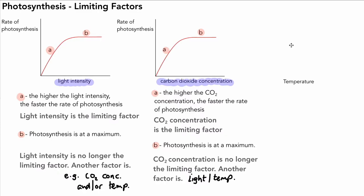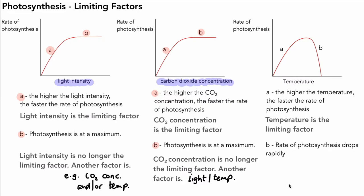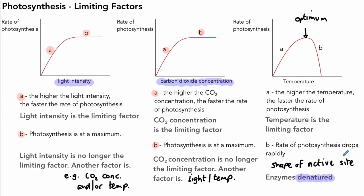The graph for temperature versus rate of photosynthesis has a slightly different shape. In region A, the higher the temperature, the faster the rate of photosynthesis — temperature is the limiting factor. In region B, the rate of photosynthesis drops rapidly after the optimum temperature. This is because the enzymes controlling photosynthesis become denatured — the shape of the active site is destroyed by the excessively high temperature — so the graph differs from the previous two.